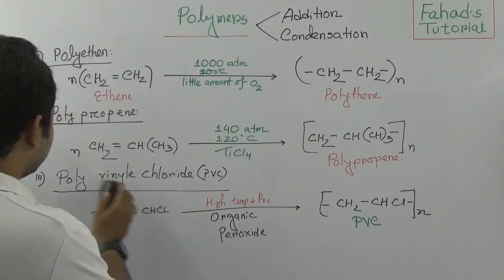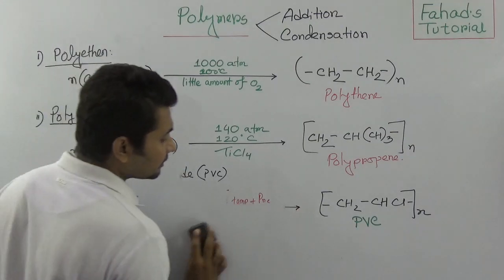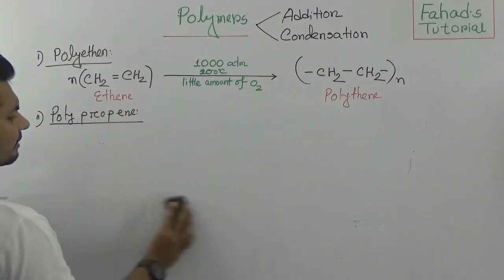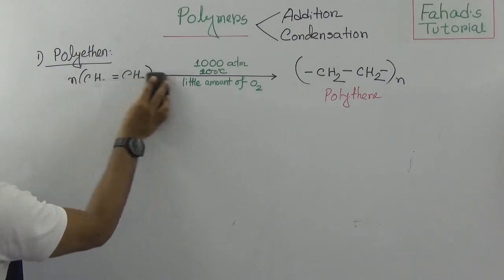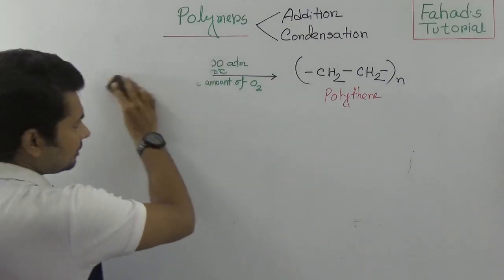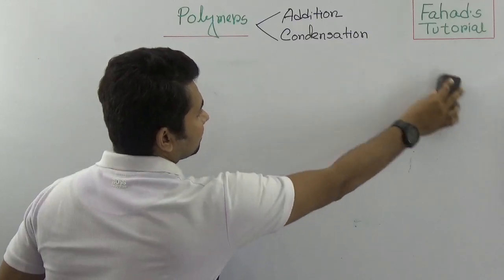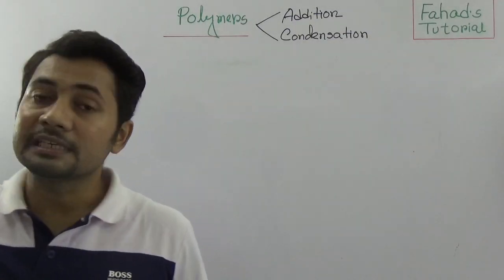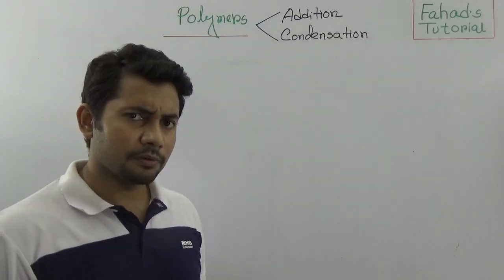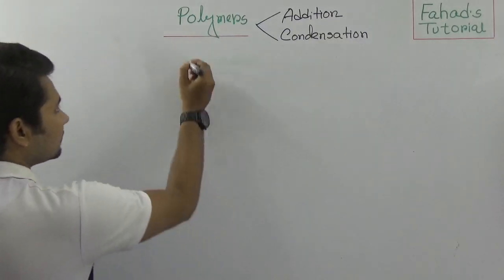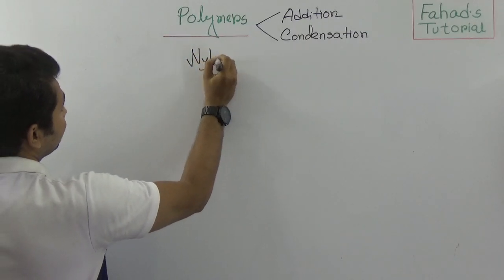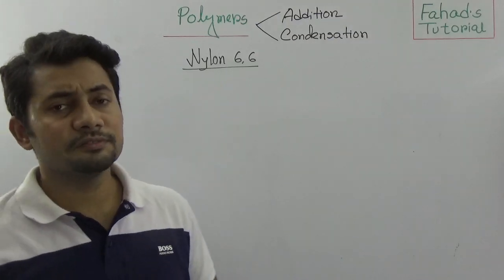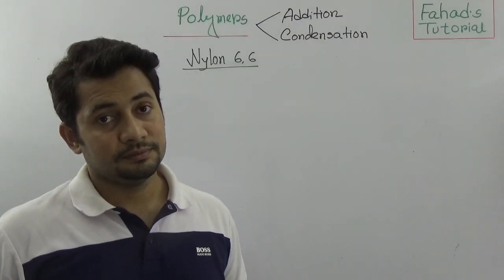Now let's concentrate on condensation polymers. You have probably heard about nylon 6,6 — it is a polymer formed from the reaction of adipic acid and hexamethylenediamine. Nylon 6,6 is a polymer produced from two different reactants.